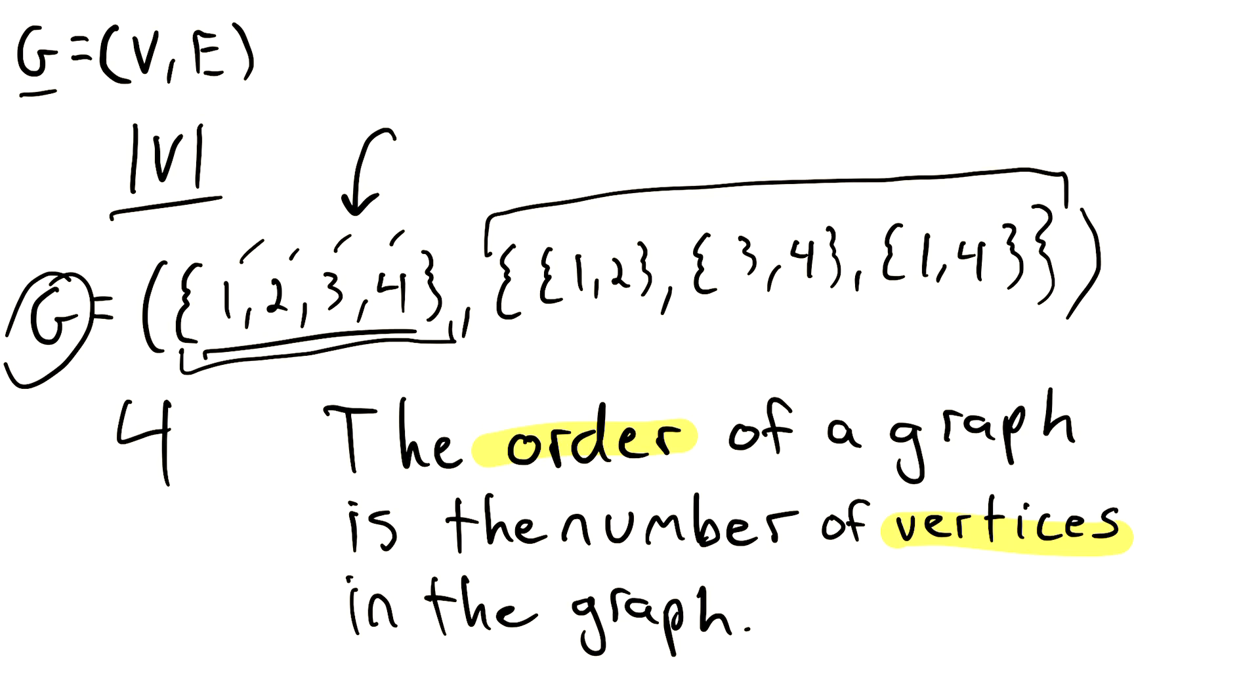And the only half-decent way I can think of to remember that order is related to vertices is that vertices are often called nodes. That's another word for vertices in graph theory. And nodes has three letters in common with order: the O, the D, and the E. So maybe that'll help you remember a little bit. But I'll put that aside and move on to a diagram of a graph.